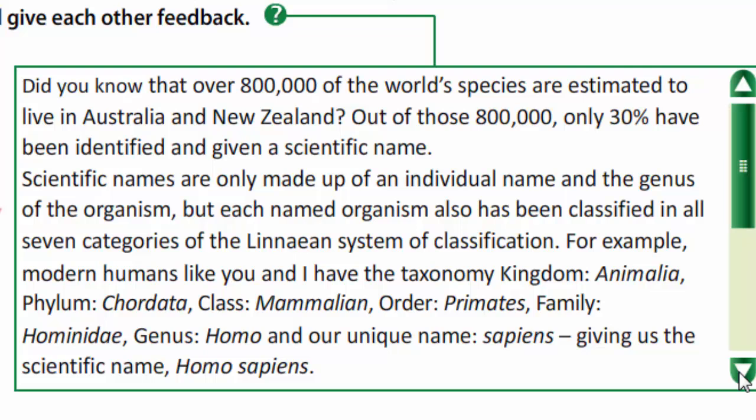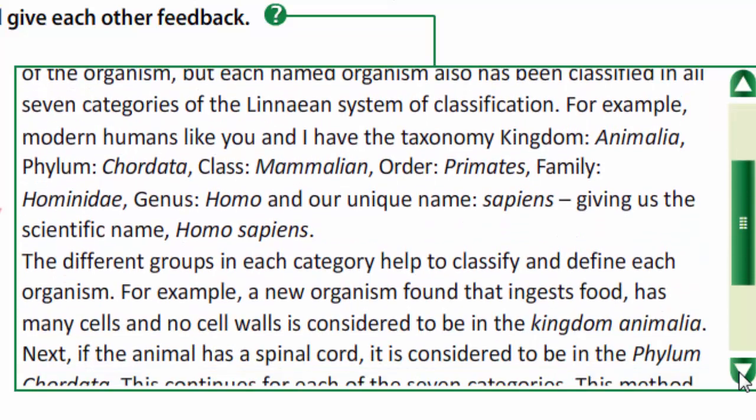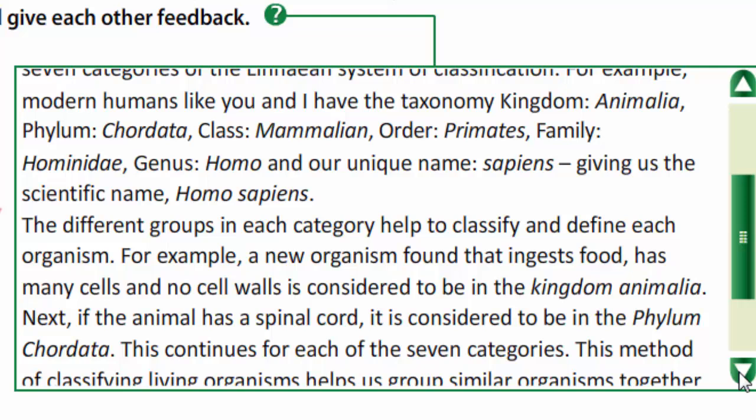For example, modern humans have the taxonomy: kingdom Animalia, phylum Chordata, class Mammalia, order Primates, family Hominidae, genus Homo, and our unique name, Sapiens — giving us the scientific name Homo sapiens.